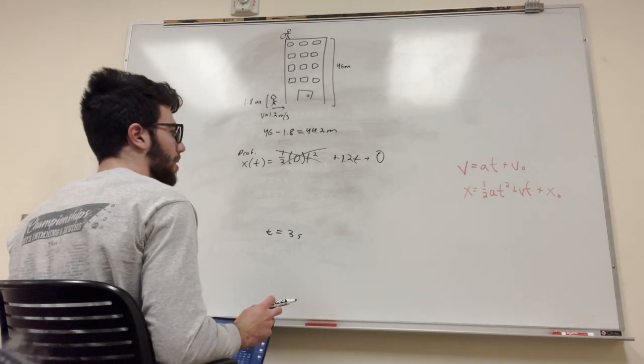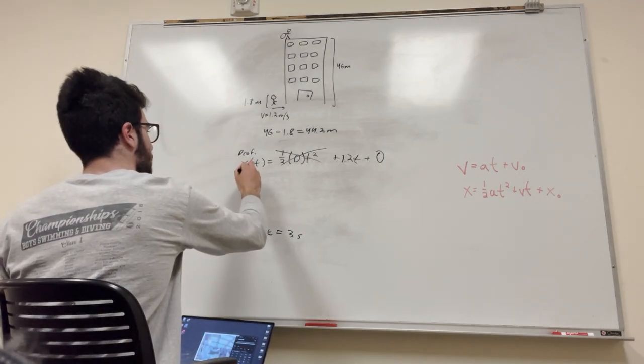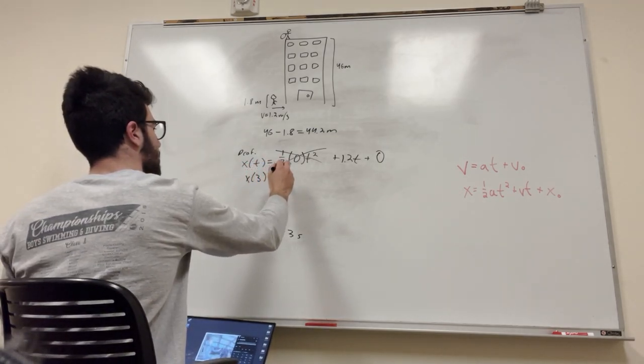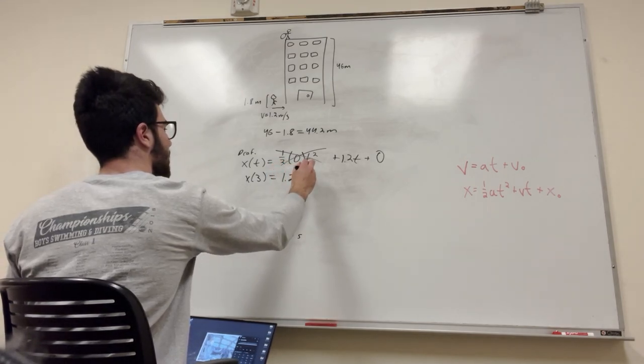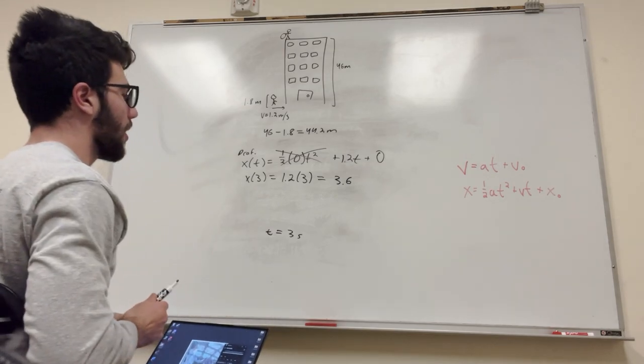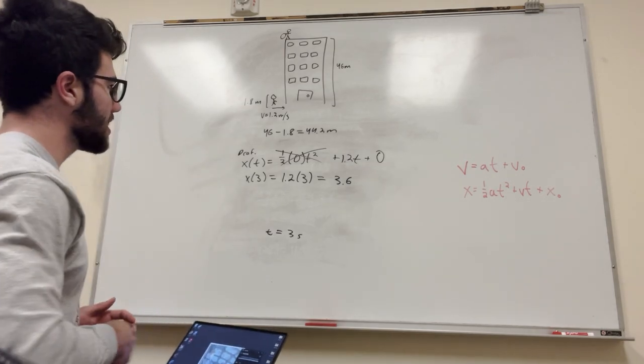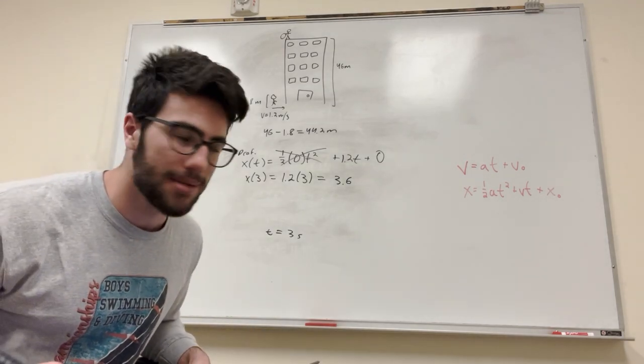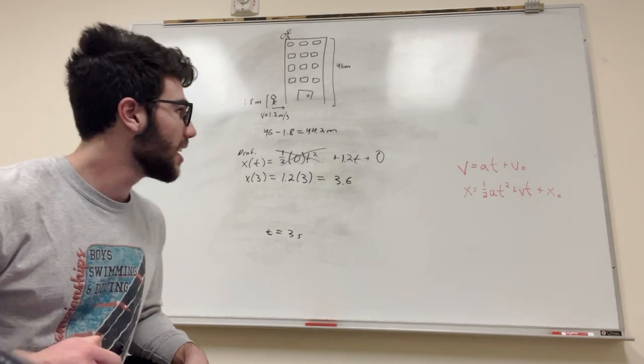So then, if we plug in x of 3, is equal to 1.2 times 3, which is equal to 3.6. That's how far he walks in those 3 seconds, basically. That means that we want to start with him 3.6 meters away from the wall, from the building.